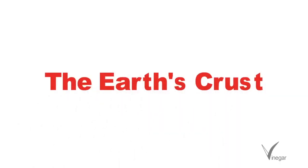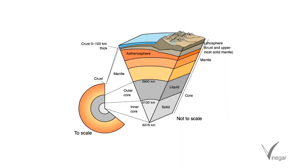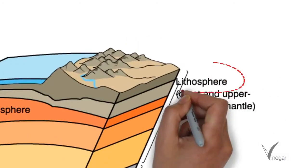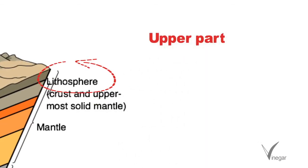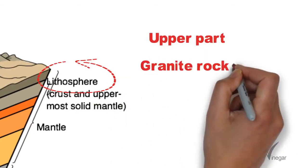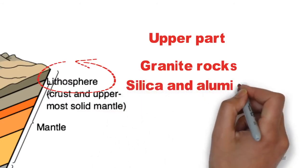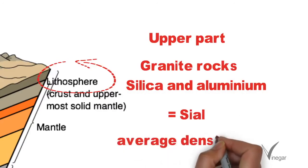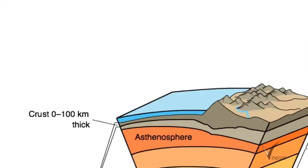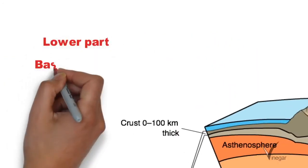Let's talk about Earth's crust. Earth is made up of many concentric layers. The outer layer of the Earth is known as the lithosphere. It has two parts. The upper part is made up of granite rocks — our continents are made up from this. Its main constituents are silica and aluminium, which is why it is also known as the SIAL layer. Its average density is 2.7.